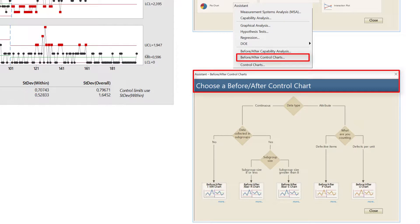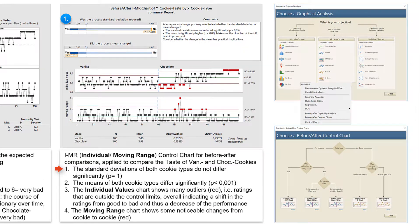But I don't want to look at changes of one cookie type, but compare the vanilla and chocolate cookies. There is no significant difference between the standard deviations of the two cookie types, but the means of both cookie types differ significantly.